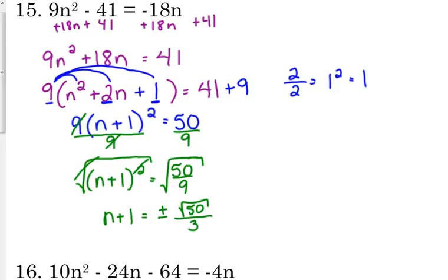And then final step, subtract 1 from both sides. So my variable n is equal to negative 1 plus or minus the square root of 50 over 3.